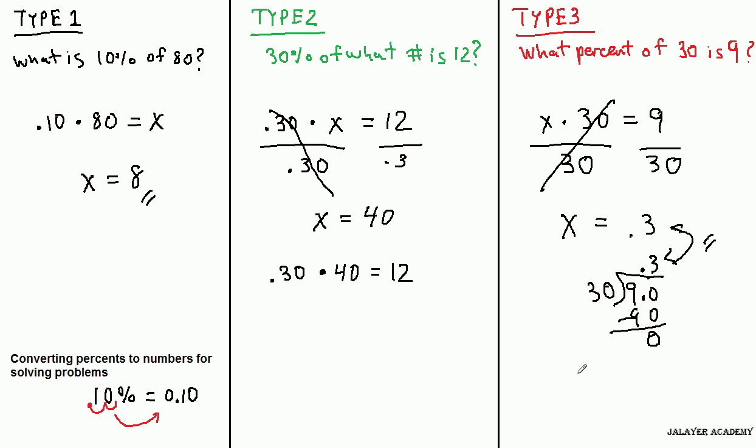And 0.3, to convert it back to a percentage, to round this example out, we go the opposite way, two places. So 30%.